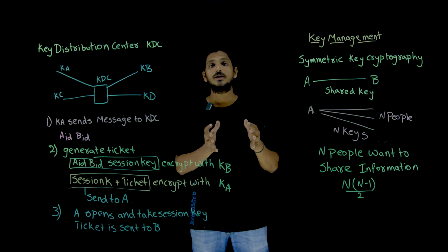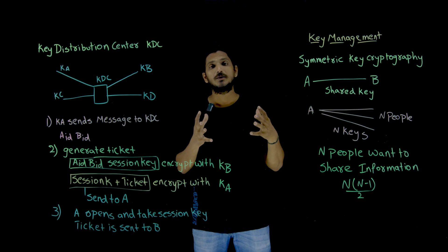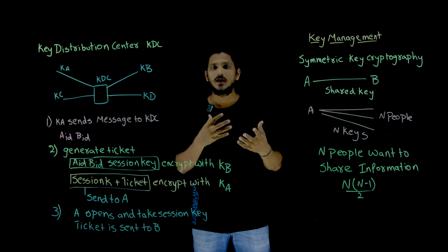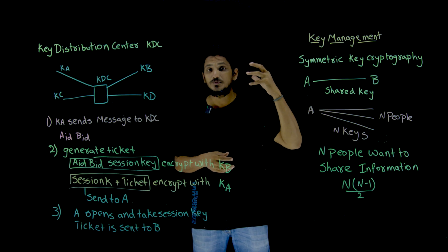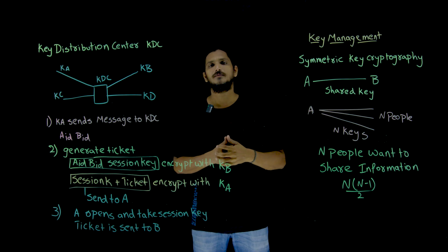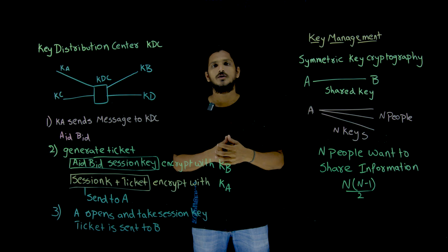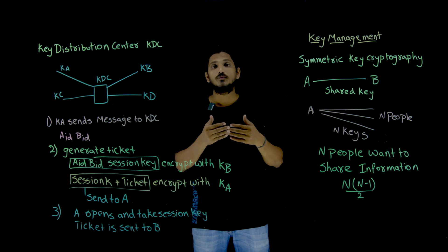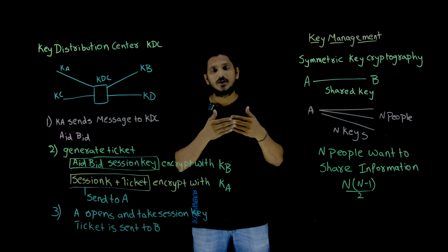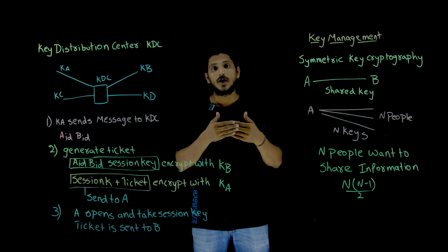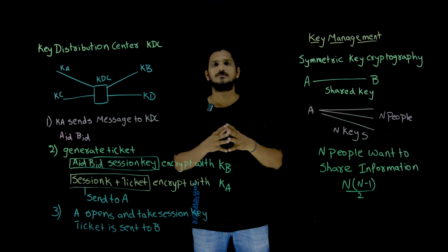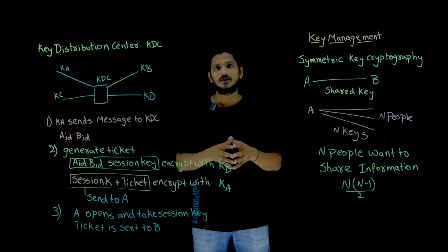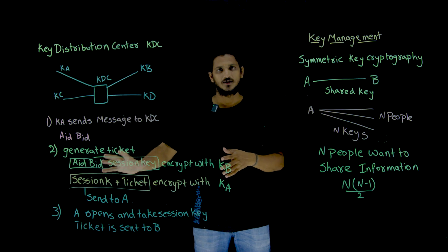Now think about it in a big picture. If 1 million people over the internet want to exchange information, how many keys have to be generated? So we need to manage that and we need to reduce the number of keys generated in order to exchange information between two parties. How are we going to do that? That's what we are going to understand here.